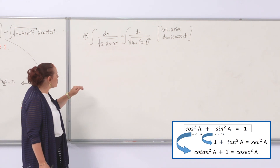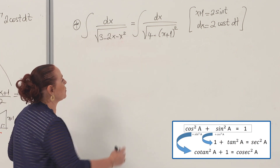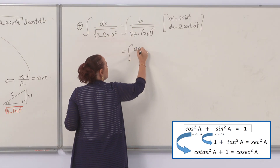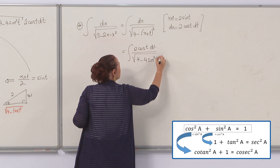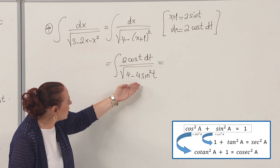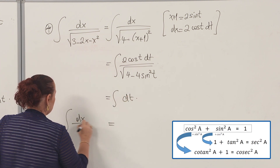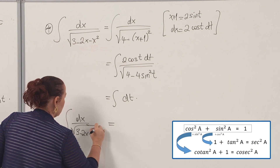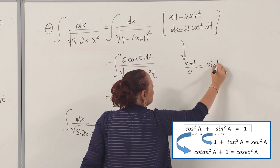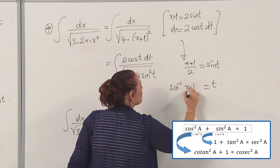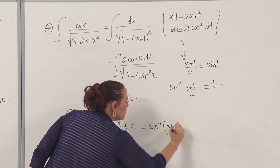If you take the same expression and put it in the denominator and try to evaluate that integral, we do exactly the same substitution. With dx = 2 cos(t) dt and the denominator being √(4 − 4 sin²(t)) = 2 cos(t), they eliminate each other and we end up with ∫dt. The answer is t + C. Since x + 1 = 2 sin(t), t = arcsin((x+1)/2), so the answer is arcsin((x+1)/2) + C.